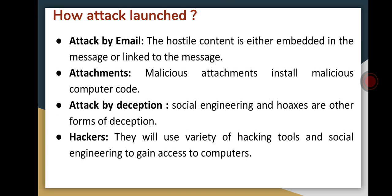Now, how is an attack launched using these attack vectors? The first is attack by email. Here, hostile or malicious content is either embedded in a message or linked to a message. Spam is always a carrier for scams, frauds, or malicious actions. They can include malicious content in attachments or embed it in a message or link to the message they are sending by email, and by doing this they can perform malicious actions.